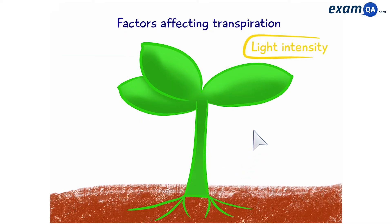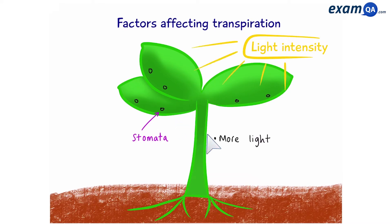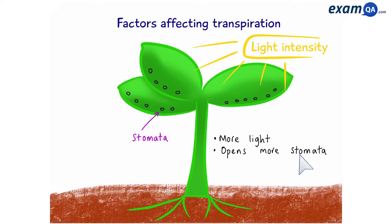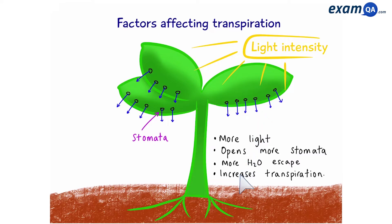Light intensity. This involves the tiny holes in the bottom of the leaf called stomata. When there's more light, there are going to be more stomata opening up. That means more water can escape, and again, this increases the rate of transpiration.